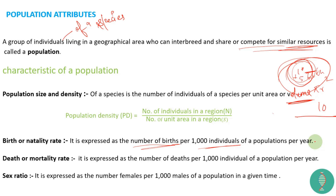Sex ratio tells us the proportion of males and females. We can express it as the number of females per thousand males, or alternatively as the number of females per thousand females depending on which ratio we want to find.